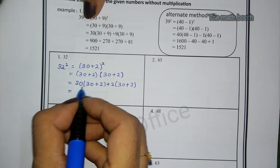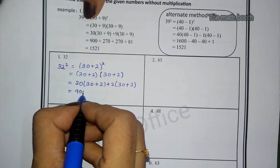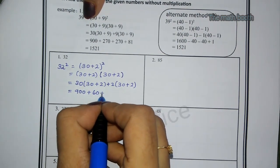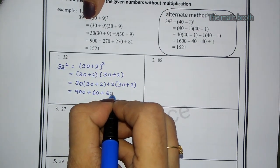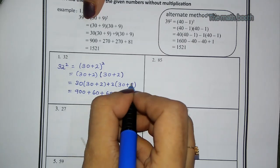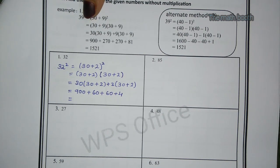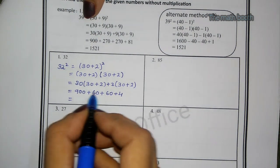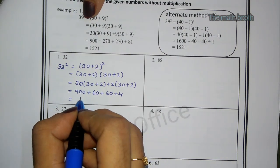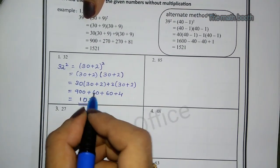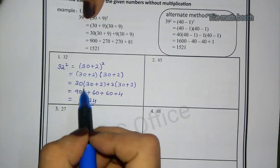Bracket into bracket. 3 times 3 is 9, how many zeros? Two zeros. Plus 3 times 2 is 6, one zero. Plus 2 times 3 is 6, one zero as it is. Then 2 times 2 is 4. How we get here now? We will add this. 900 + 60 + 60 + 4. If we add this all, we get 1024 answer. And to check whether the answer is correct, you can multiply 32 into 32 and verify your answer.